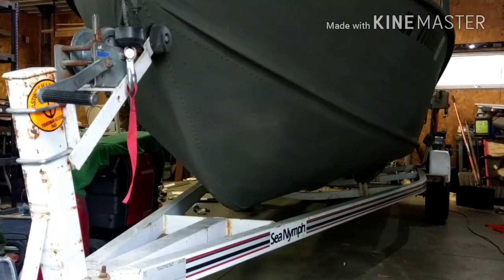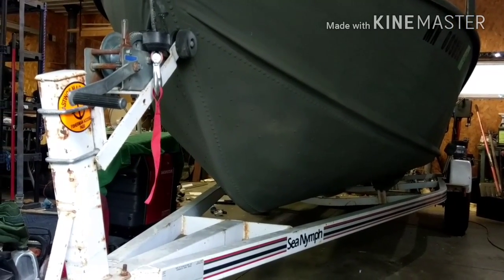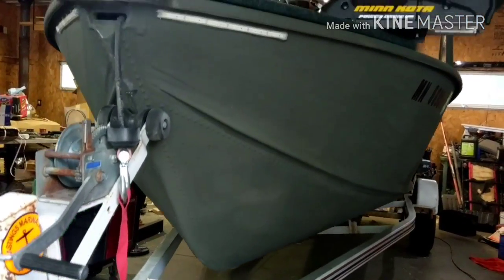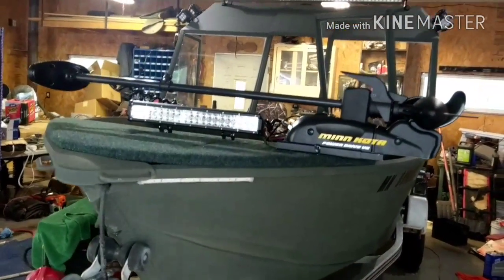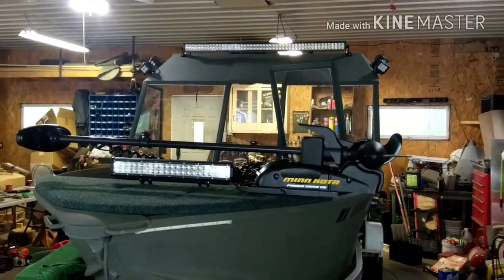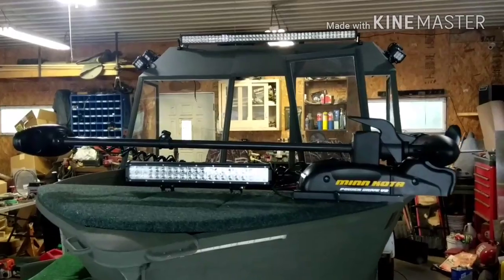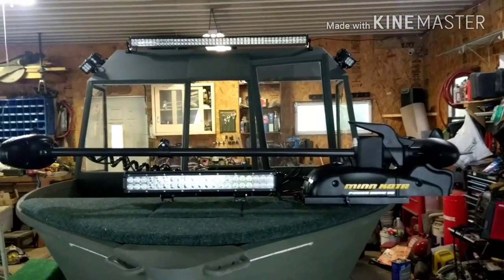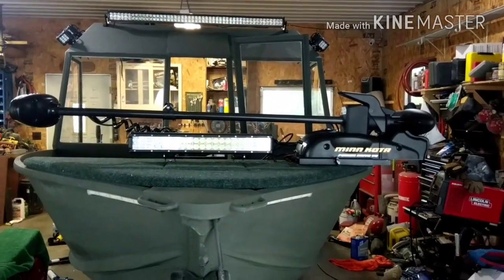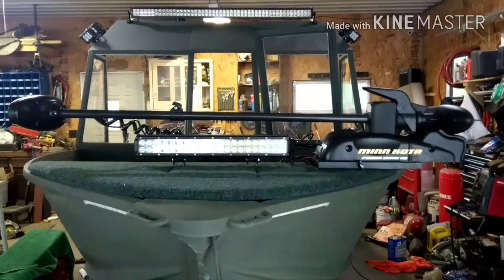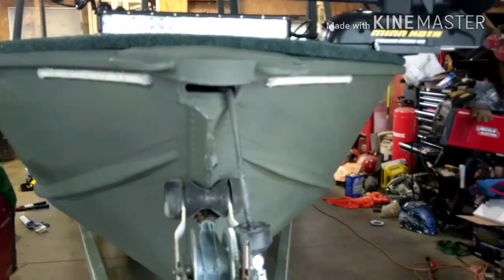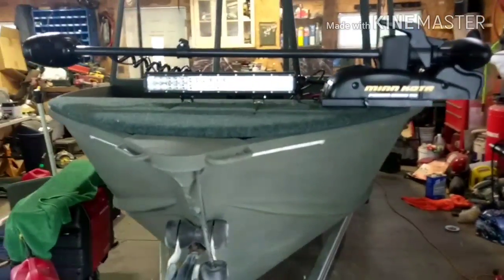So without further ado here, I'll give you the first look at what this boat looks like. We've got five LED light bars on the front, four of them facing off to the side. We've got the 55-pound Minn Kota Power Drive V2 converted to an iPilot. We've got the LED bow lights on the front. Front casting deck is installed.